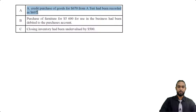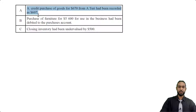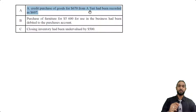So the first item: a credit purchase of goods for $670 from A2RE had been recorded as $607. You see how we mixed up the digits — that's called an error of transposition. You can always double check because the difference will always be divisible by nine. The figure that was actually used, $607, is less than the correct figure of $670 by $63. That means each account — the purchases account and A2RE — would both be too low by $63. So we have to debit purchases and credit A2RE for $63.